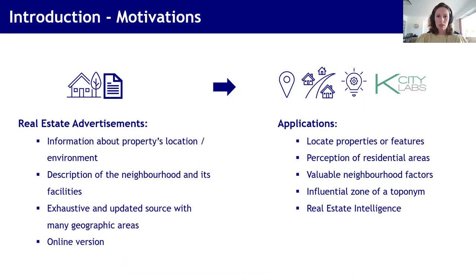Geographic and spatial information is found in many text-based documents, such as social media, newspapers, or novels. But in our work, we decided to study real estate advertisements as we collaborate with KCT Labs, and also because real estate advertisements have several advantages for extracting spatial information. They generally provide information about properties, location, and environment, as location is one of the most important factors in purchasing decisions. They provide description of the neighbourhood and its facilities, and they are a fairly exhaustive and updated source of data, since many areas and cities are found, and often they have an online version that facilitates data collection.